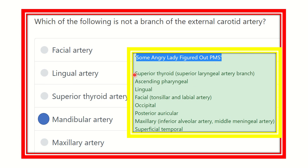Through these mnemonics we can remember all the branches of the external carotid artery. The mandibular artery is not a branch of the external carotid artery, whereas the facial artery, lingual artery, superior thyroid artery, and maxillary artery are all branches of it. The facial, lingual, and superior thyroid arteries are the anterior branches, and the maxillary artery is a terminal branch. Thank you.